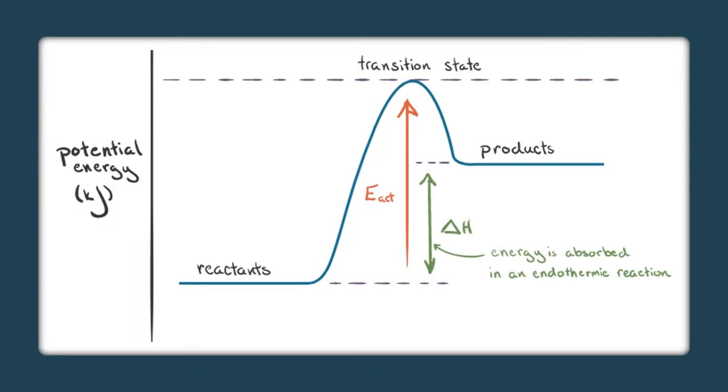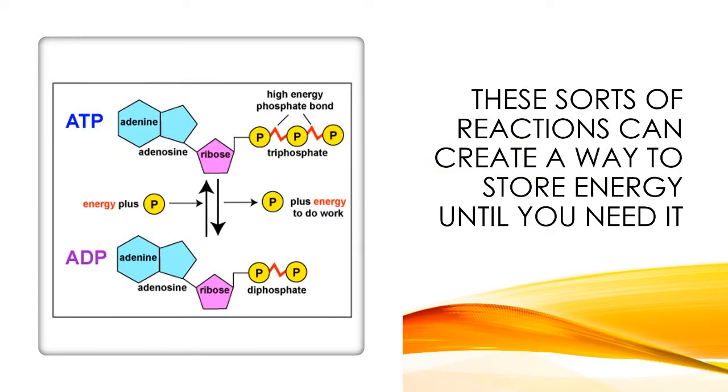And in an endothermic reaction, if we looked at the same sort of graph, the potential energy of the reactants is actually a lot lower than the potential energy of the products. I'm storing that energy. So I'm taking the energy from the sun, and I'm storing it into the glucose molecules. So the potential energy of my products is actually a lot higher than the potential energy of my reactants was.